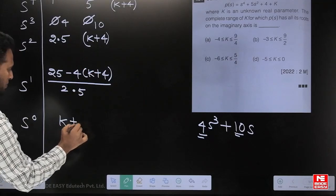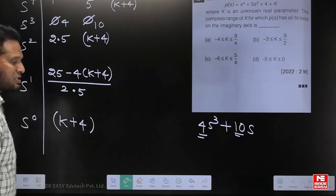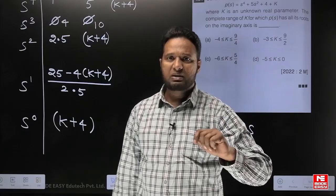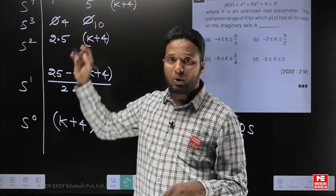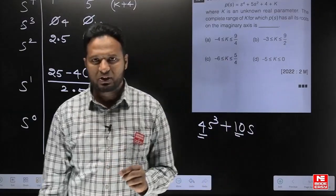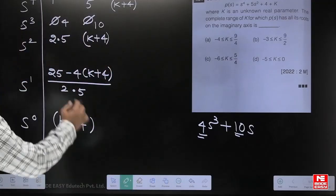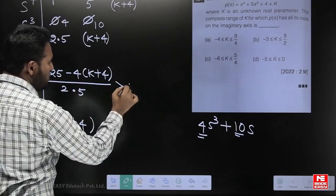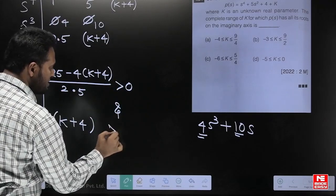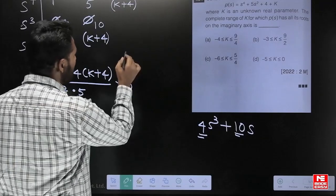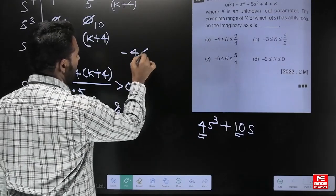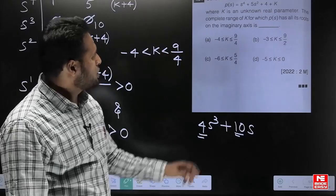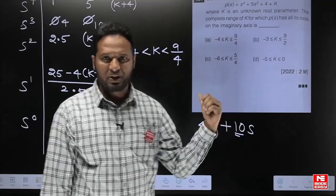For all roots of this fourth-order polynomial to be on the j-omega axis, the s³ row must be zero and there must be no sign changes in the first column. Since the existing elements are already positive, the remaining two elements — 2.5 and k+4 — must both be greater than zero. From this, we can confine the answer as minus 4 less than k less than 9/4. The answer to the question is option A.